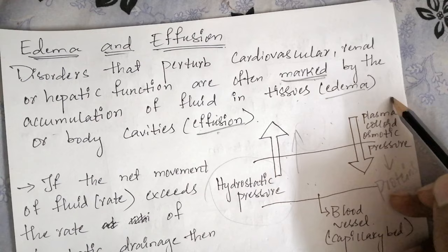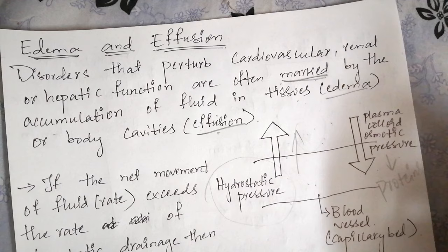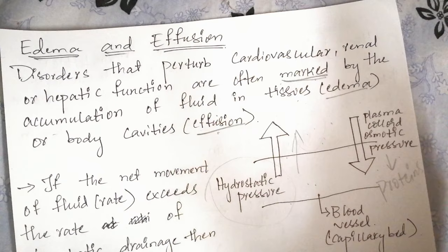Even in a normal person, some amount of fluid gets out into the interstitial spaces, but this fluid is drained by the lymphatic drainage system, which takes all the fluid from the interstitial spaces and puts it back into the blood vessels through the thoracic duct, basically helping to keep the tissues dry and preventing edema and effusion.